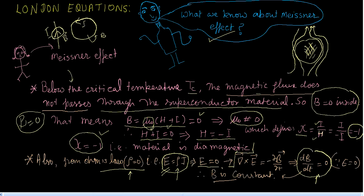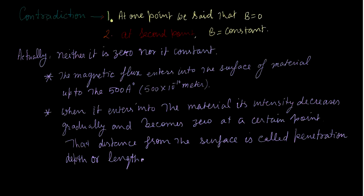Since E equals zero, from Faraday's law the time derivative of the magnetic field equals zero, meaning B is constant inside the superconductor. But from the Meissner effect we said B equals zero, and now we're saying B is constant — this is a contradiction about the magnetic field inside superconductors.